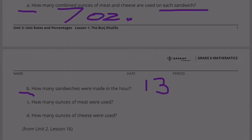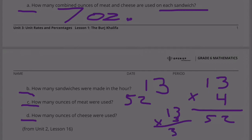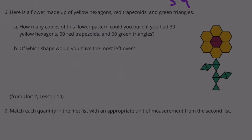Part C: How many ounces of meat were used? That's going to be 13 multiplied by 4, because there were 4 ounces of meat for each one. 13 times 4 is 52. And then finally Part D: How many ounces of cheese? Well, that's going to be 13 times 3. 13 times 3 is 39. So there were 39 ounces of cheese used to make 13 sandwiches.